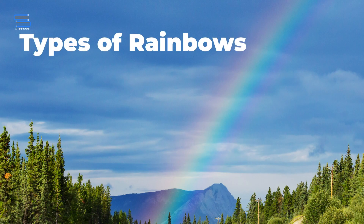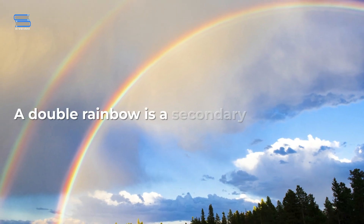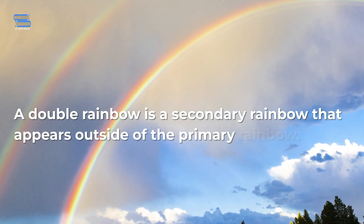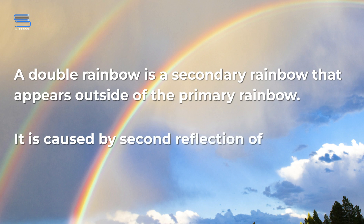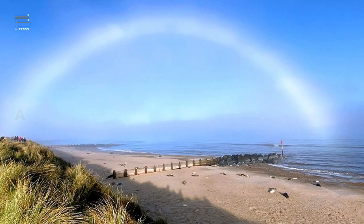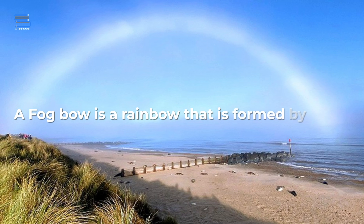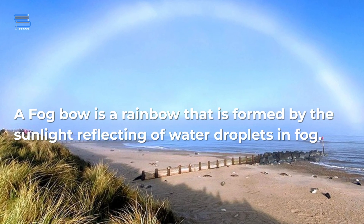There are different types of rainbows, such as double rainbows and fog bows. A double rainbow is a secondary rainbow that appears outside of the primary rainbow. It is caused by a second reflection of light inside the water droplet. A fog bow is a rainbow that is formed by sunlight reflecting off water droplets in fog.